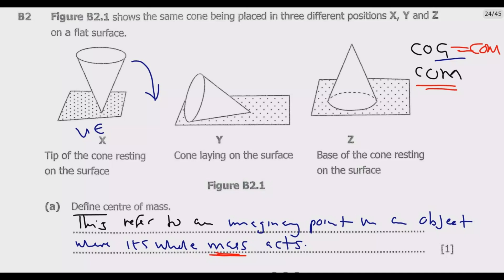You look at Y. Y is neutral equilibrium. When you displace this cone a bit, it will just move a bit, then it will maintain its equilibrium in the new position.